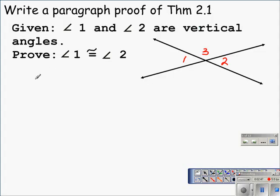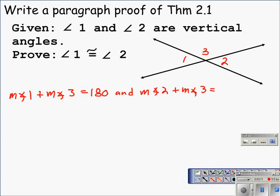The first statement that we can make is that the measure of angle 1 plus the measure of angle 3 is equal to 180. We can also say then that the measure of angle 2 plus the measure of angle 3 is equal to 180. Now, there's really two reasons for that. That is because angle 1 and angle 3, and angle 2 and angle 3 are linear pairs, and an application of the angle addition postulate. So we can make this statement for this reason.